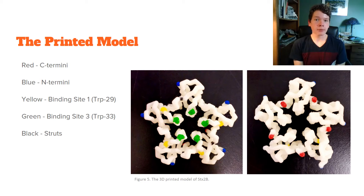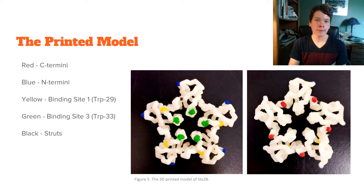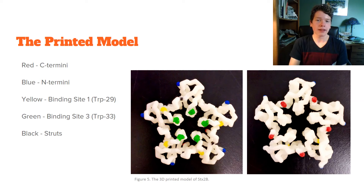We created a 3D printed model of our protein, which can be seen in figure 5. The C termini of the backbones are painted red. The N termini are painted blue. Binding site 1 at the 4 residues of tryptophan 29 is painted yellow. Binding site 3 at each tryptophan 33 residue is painted green. The structural supports are painted black. Our print came out very cleanly, and our model is an accurate representation of STX2B.